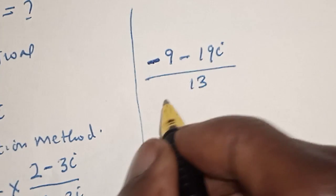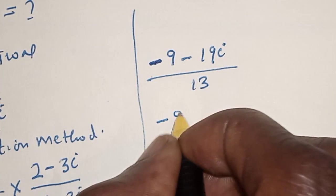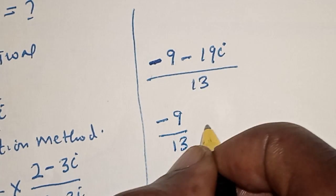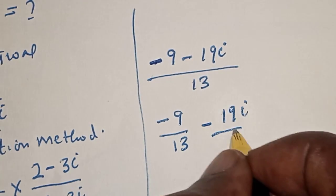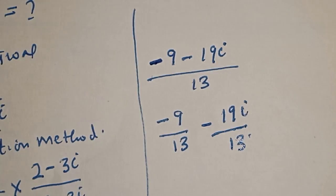So, let's form our real and imaginary part. We have minus 9 over 13 minus 19i over 13.